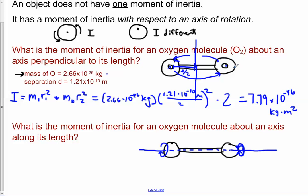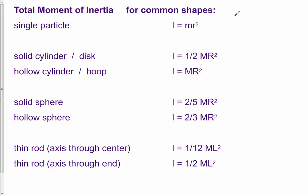In the first example we just had two atoms, and it wasn't hard to add two mr-squareds together. However, if you have an object with many atoms, you're not actually going to individually add them up. It becomes an integral — in fact a multivariable calculus problem. The results of all those integrals give a different moment of inertia for different shapes.